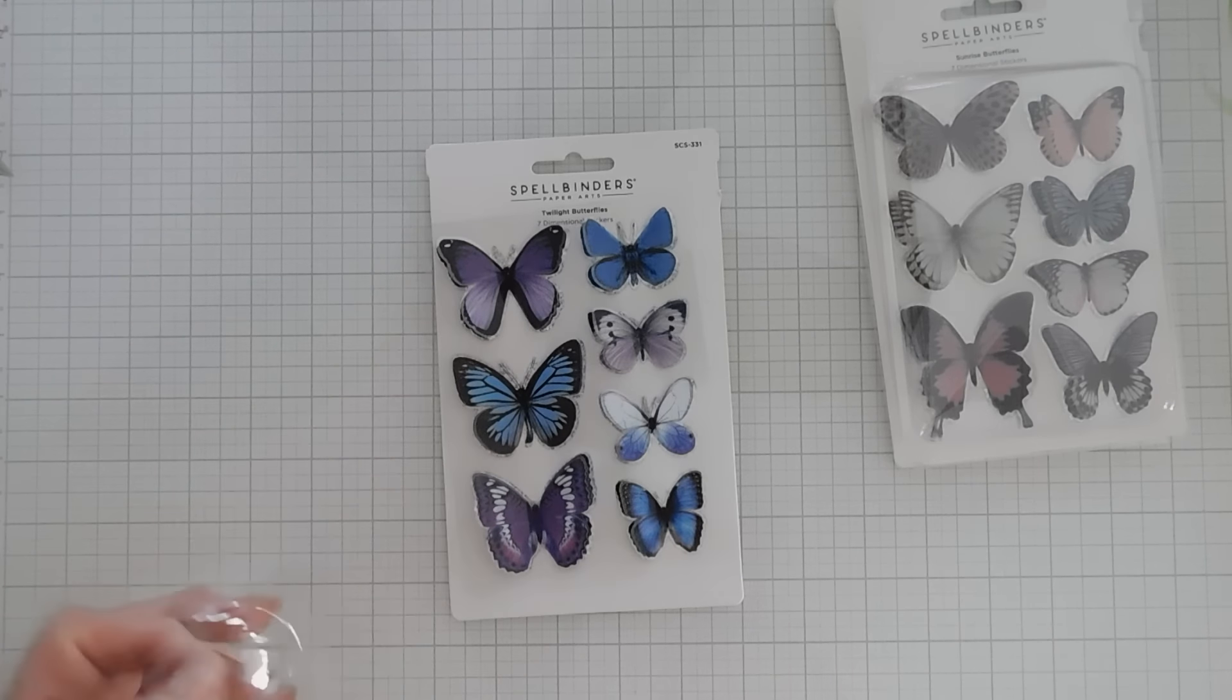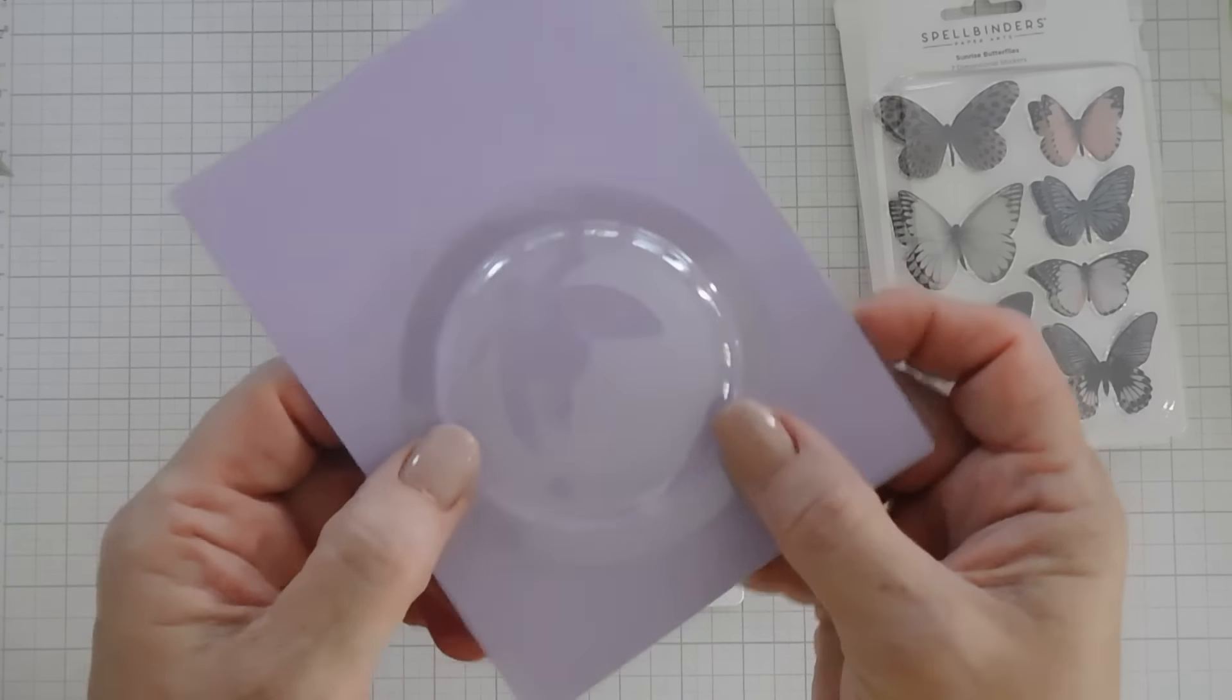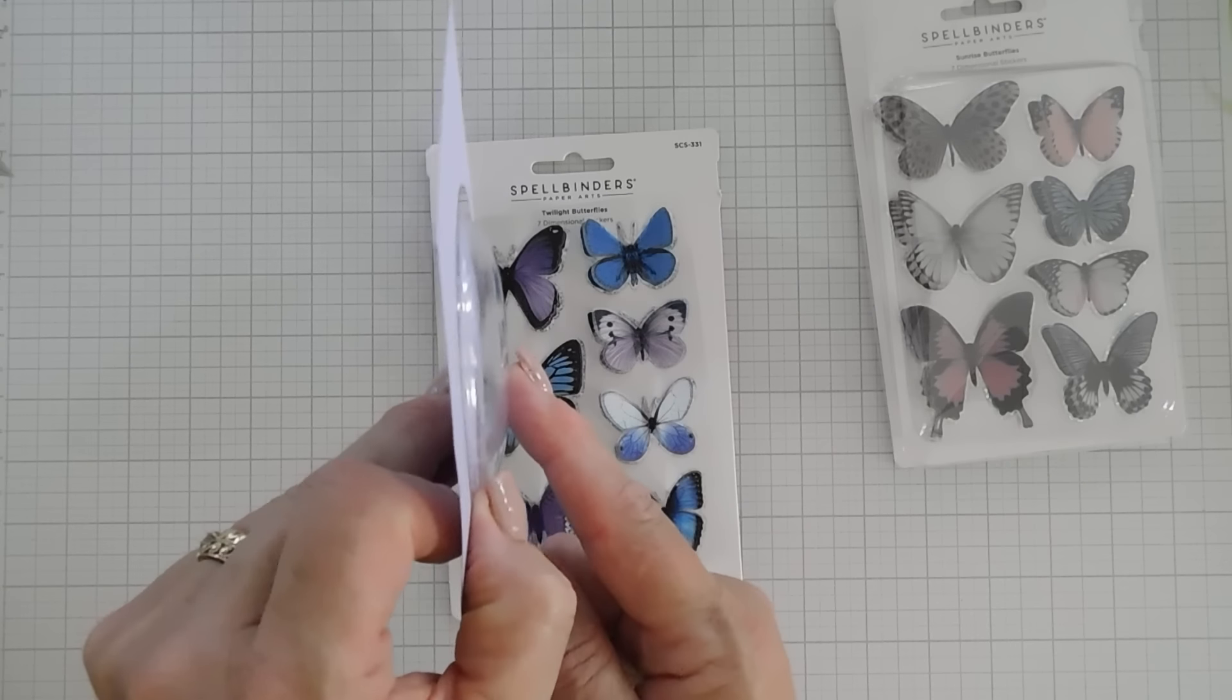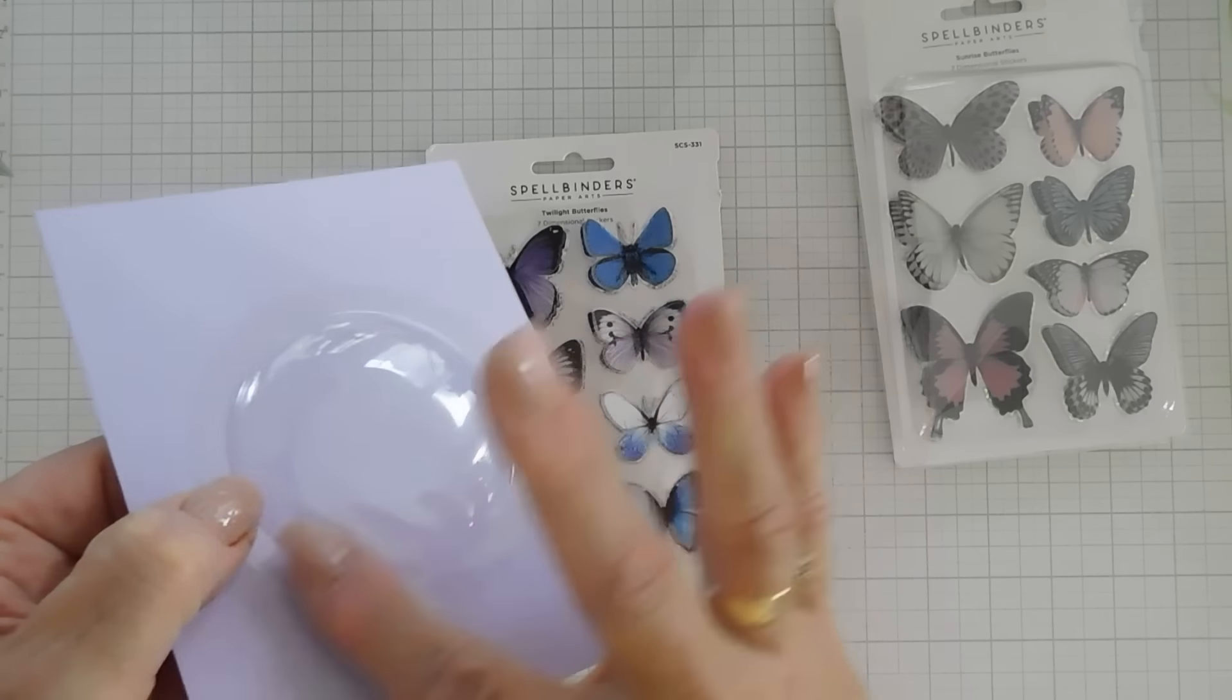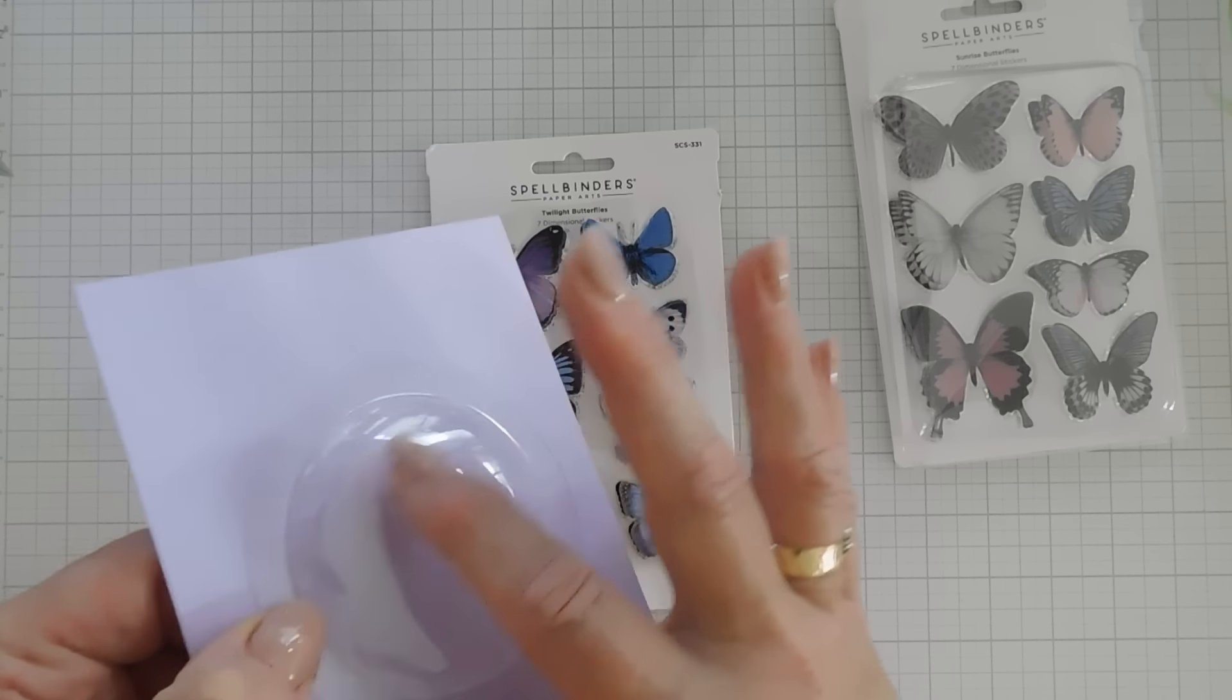I know when Spellbinders had their card kits, I loved when they included these stickers. I have two different sets: the Sunrise Butterflies and the Twilight Butterfly stickers.